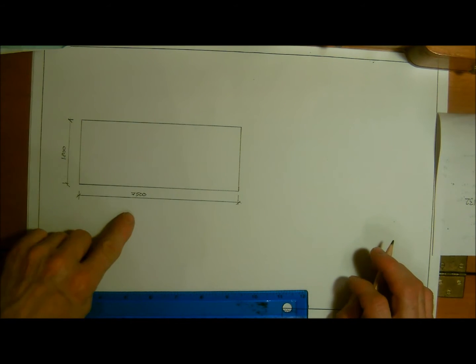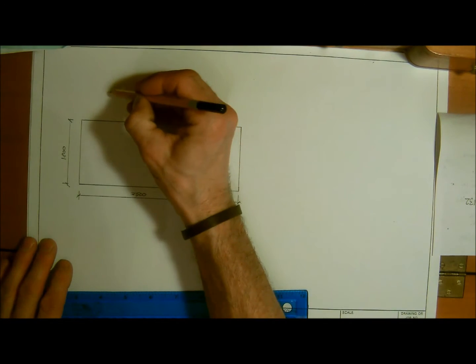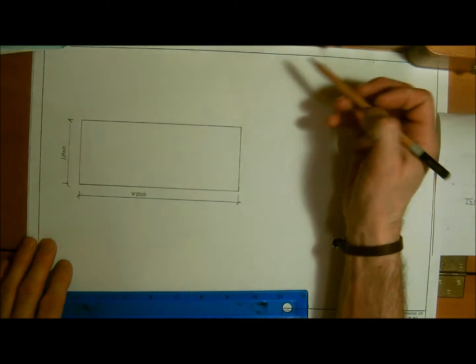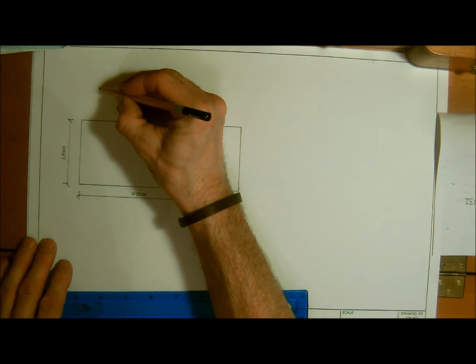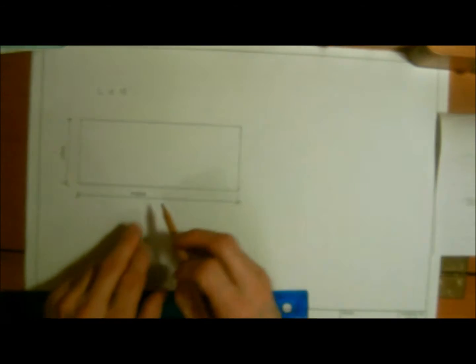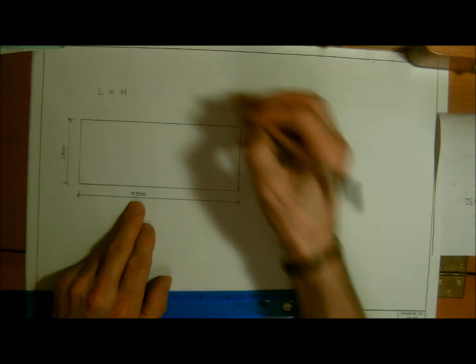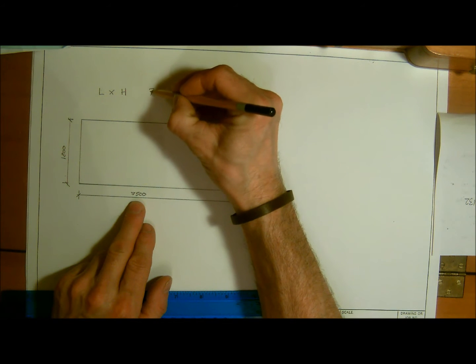So again, just to recap on the formula: we're after two dimensions, being surface area, so we're after the length times the height. Now, to convert this 7500 millimeters, that is going to be 7.5 meters.